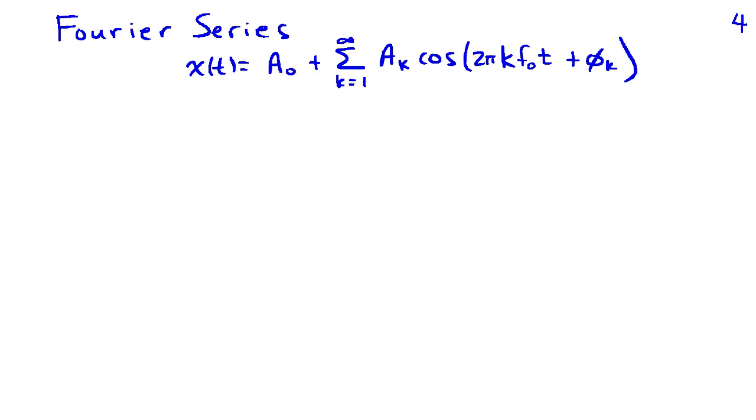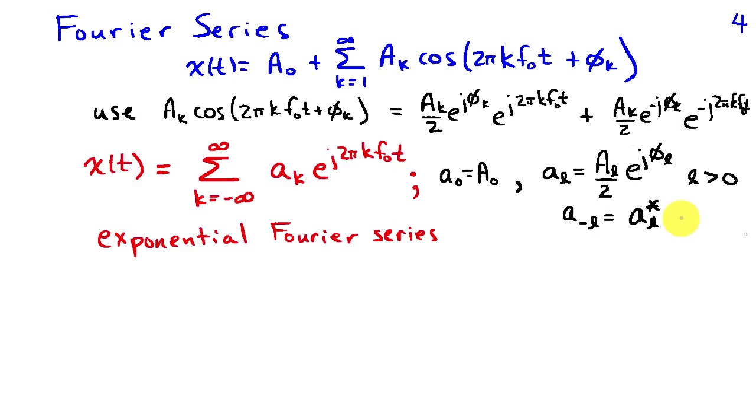Now we're going to rewrite this in a standard form that's easier to work with. So we're going to expand the cosine using the Euler representation in terms of complex sinusoids. By doing this, we have two terms, one at frequency kf₀ and then one at frequency minus kf₀. We can rewrite our sum as going from minus infinity to infinity of lowercase aₖ times a complex sinusoid, e^(j2πkf₀t).